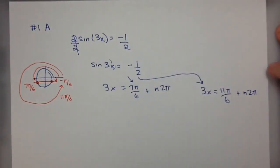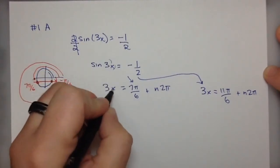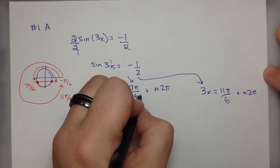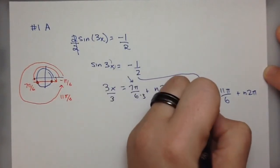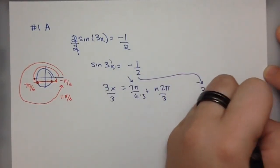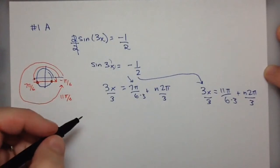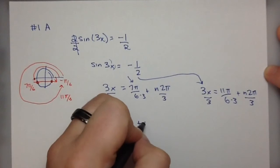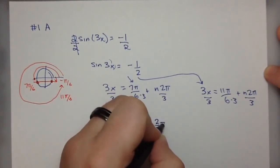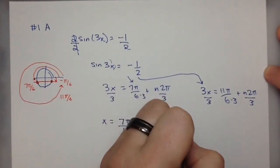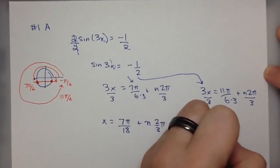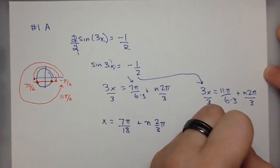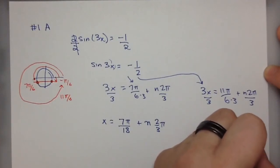We're almost done. We've been asked not to solve for 3x, but to solve for x. So we divide everything by 3. Now we have x equals 7π over 18 plus some multiple of 2/3 π, or x equals 11π over 18 plus some multiple of 2/3 π.